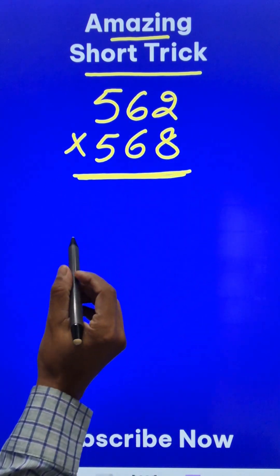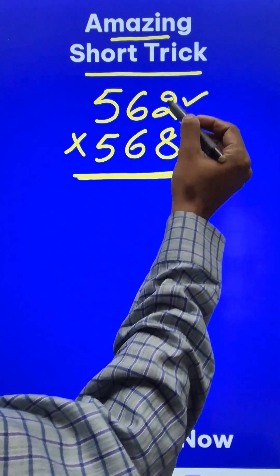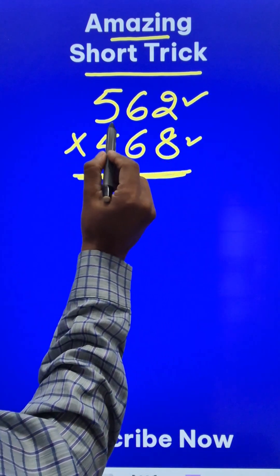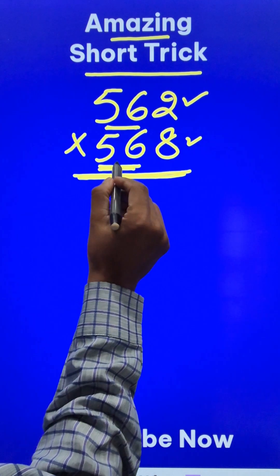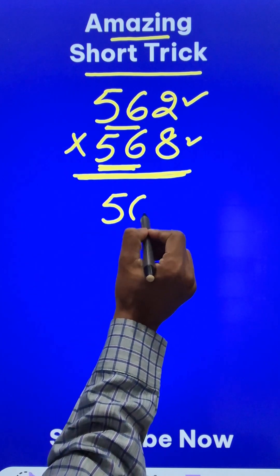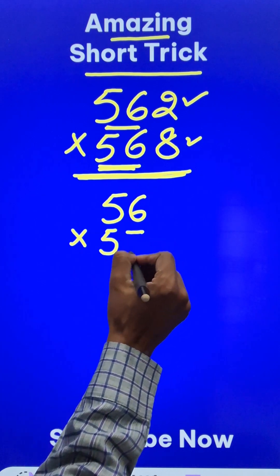You can see here there is a unique property: 2 plus 8, the sum of the unit digits is 10, and the remaining number here is 56 and here also it is 56. So the first thing I'm going to do is take up this 56 and multiply this by the consecutive number 57.